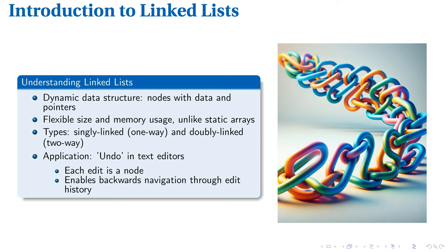Singly-linked lists have nodes with a single pointer to the next node, while doubly-linked lists have two pointers per node — one to the next and one to the previous. This bidirectional linkage in doubly-linked lists allows for more flexible navigation but requires more memory.